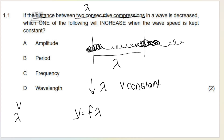Now remember, if speed is constant, frequency and wavelength are inversely proportional, which means if one goes up, the other goes down by the same proportion. So if the wavelength is decreased and speed is constant, which one will increase? It should be frequency. Frequency will increase. Your answer is C, and that is because of the inversely proportional relationship.